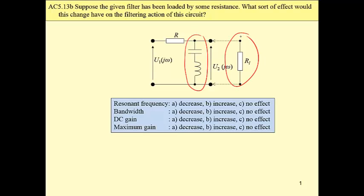The question is what sort of effect would this change have on filtering action, on amplitude response? What regards resonant frequency, bandwidth, DC gain, and maximum gain?